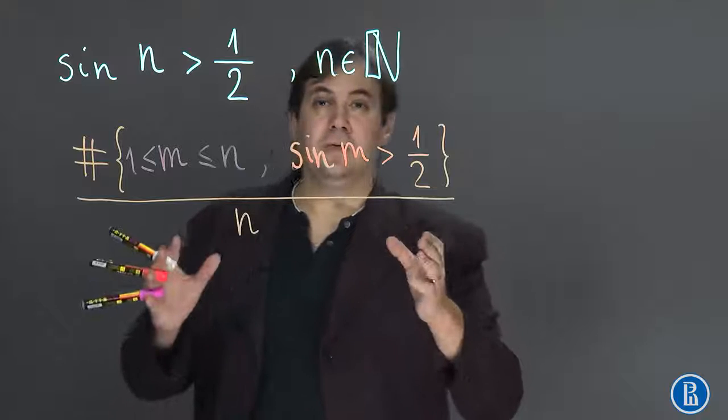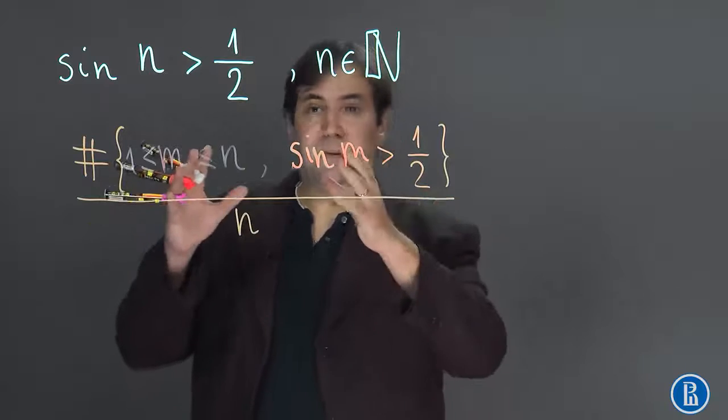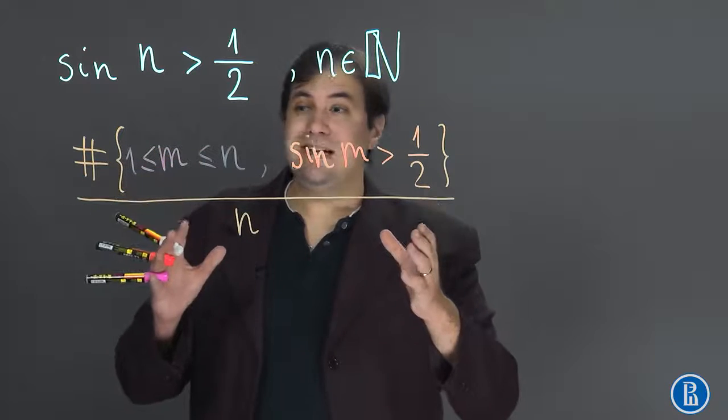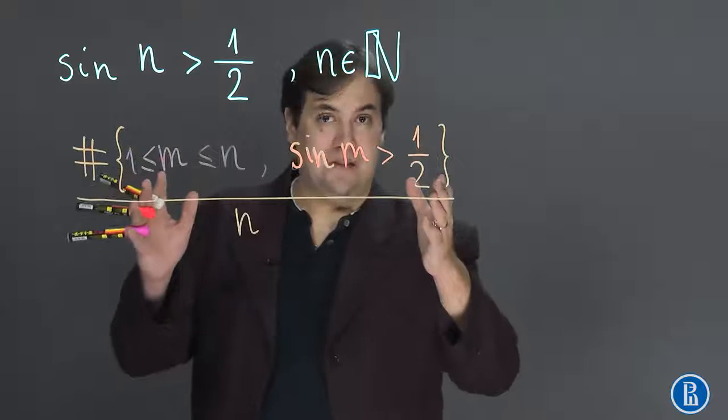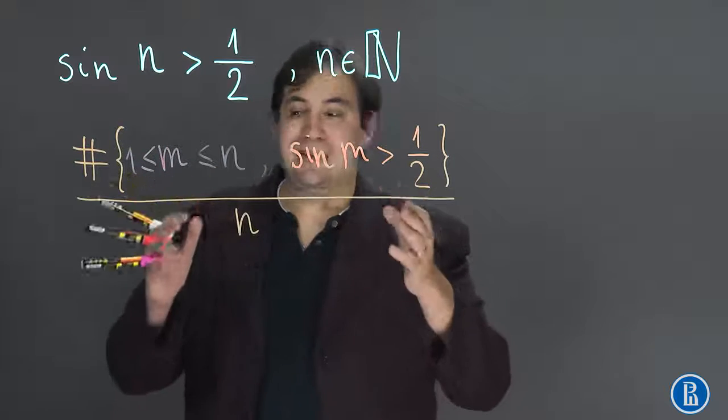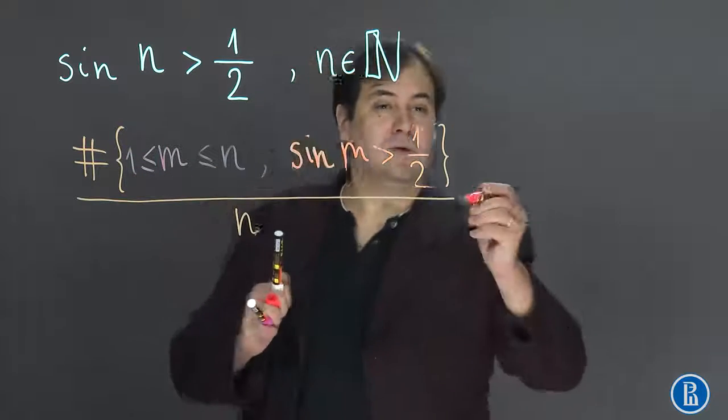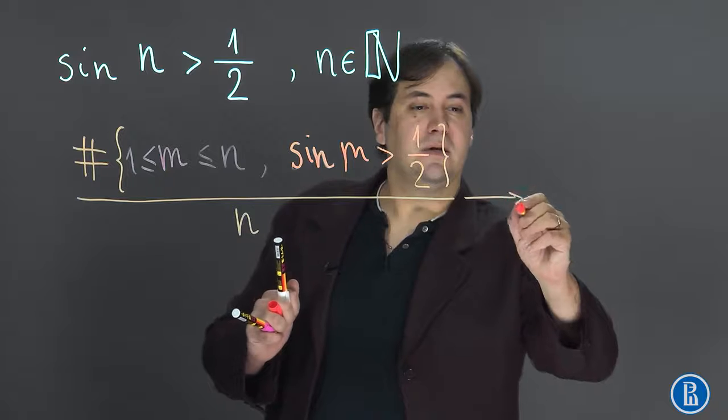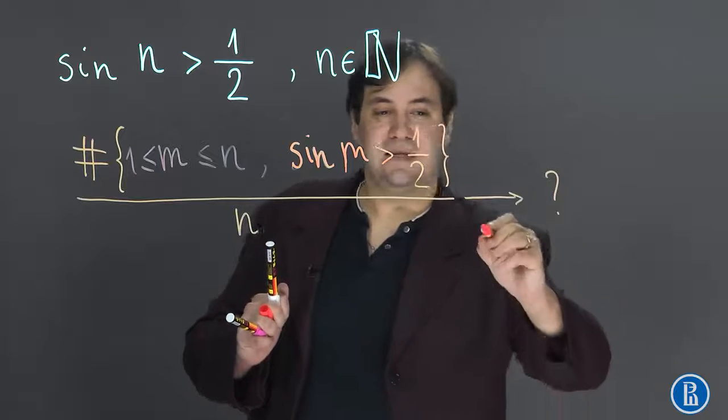This will give us the frequency of sine of m being greater than one half for m from 1 to n. And if we want to find the frequency in general, then we need to find the limit of this value when n tends to infinity.